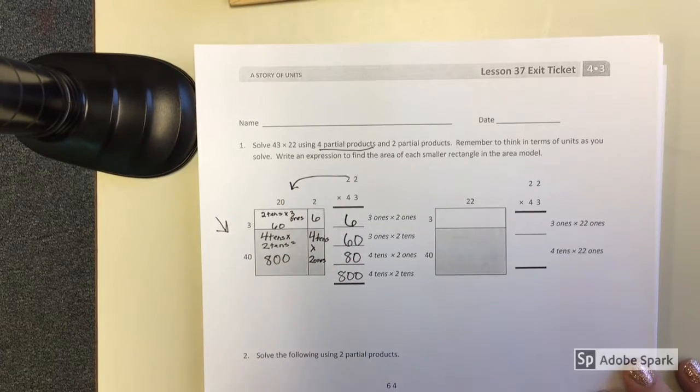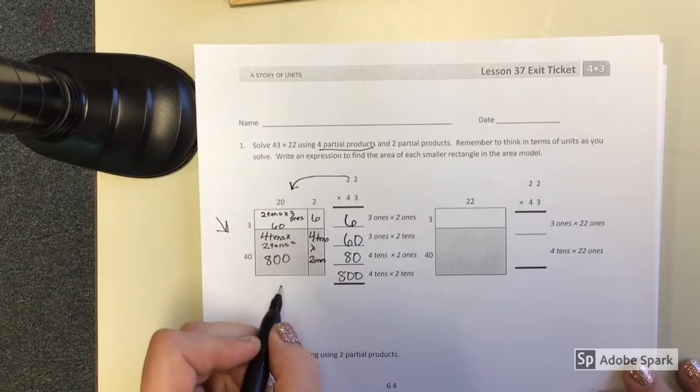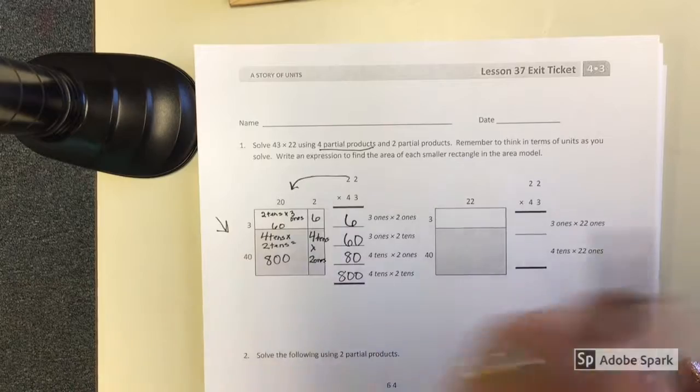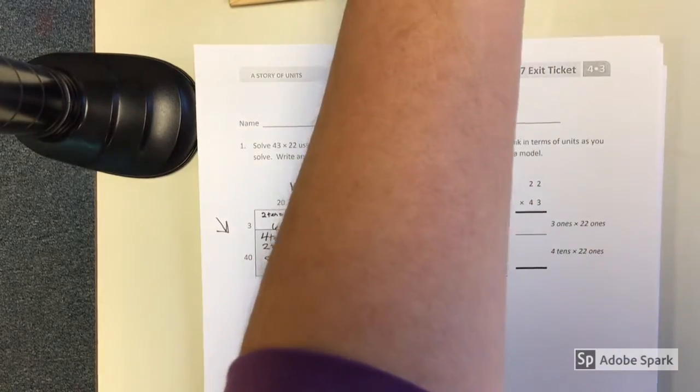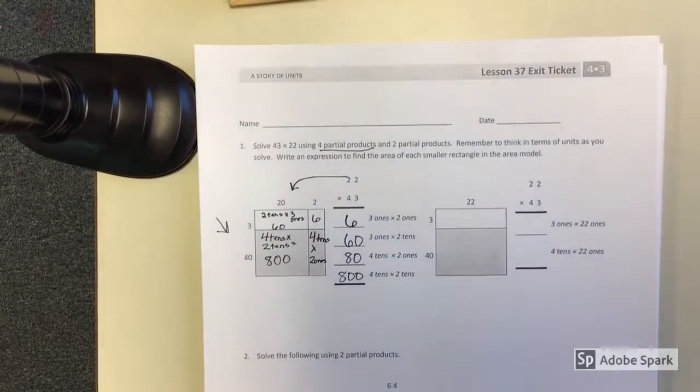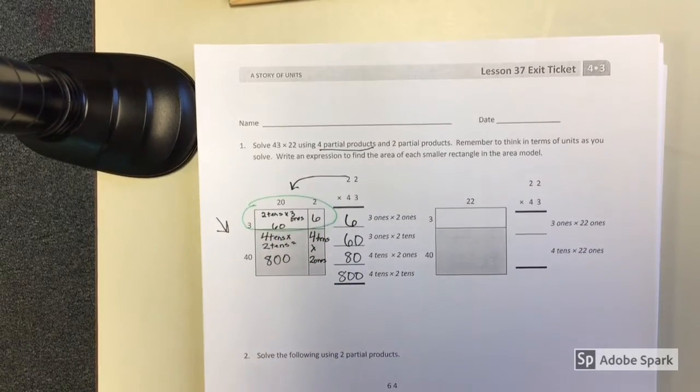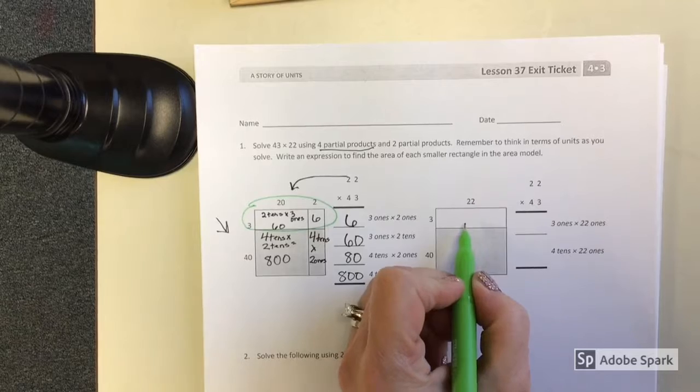Now I could add all these up and find my product. But I'm going to come over here. So now I'm going to change. Now I'm asking you to think about this whole section. And that's what's represented over here.